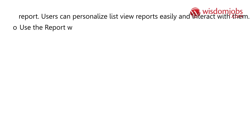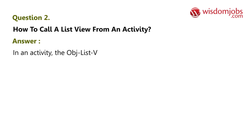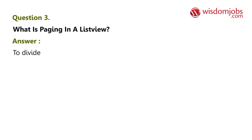Use the report wizard to define list view reports and link them to your portal. Question 2: How to call a list view from an activity? Answer: In an activity, the obj-list-view can execute a list view rule. Question 3: What is paging in a list view? Answer: Paging is used to divide the list view into different pages and set the number of records to be displayed per page.